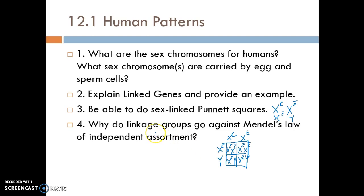Question four: why do linkage groups go against Mendel's law of independent assortment? This relates to the fact that the law of independent assortment says that genes are separated from each other independently and they are not linked. However, through research and following inheritance patterns, we have found that genes on the same chromosome often appear to be linked, unless they can get separated through crossing over.